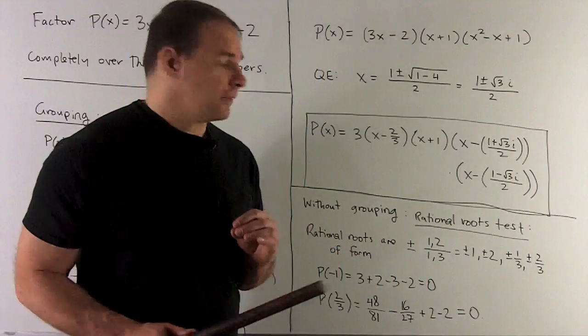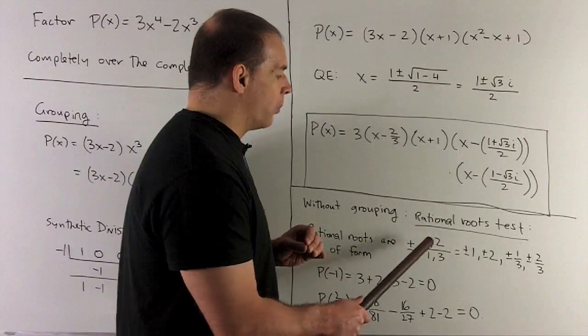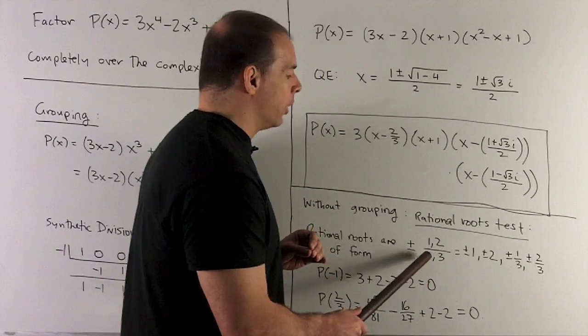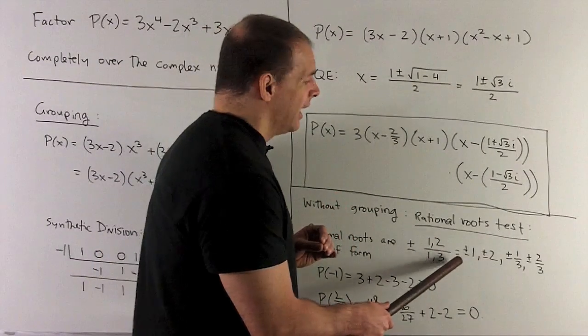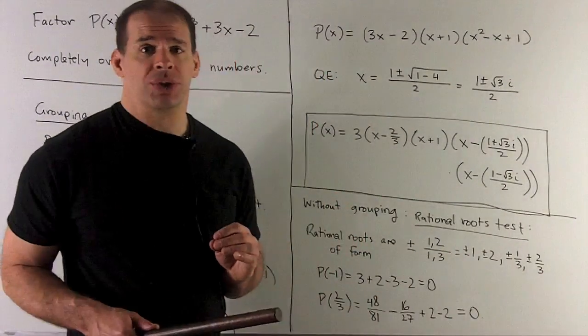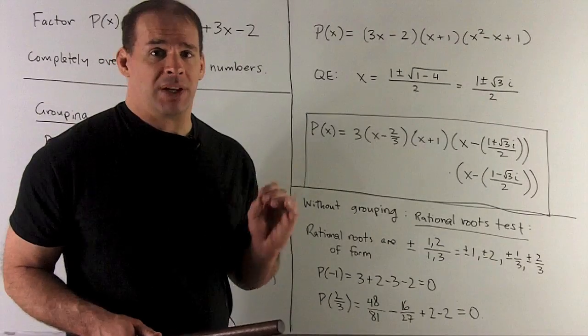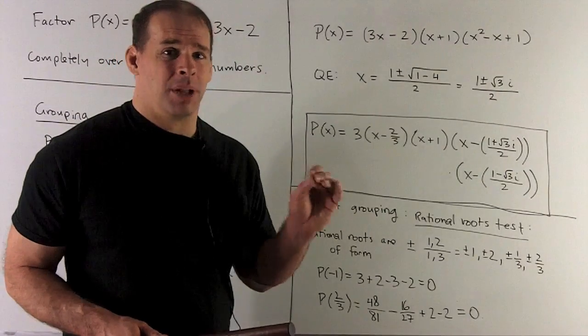So all of our rational roots are going to be the form ± (1 or 2)/(1 or 3). That means we're looking at eight possibilities for rational roots: ±1, ±2, ±1/3, ±2/3.